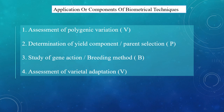In the first component we talked about how to assess polygenic variation, and in this video we will talk about metroglyph analysis and D² statistics by which we can assess this polygenic variation. After that, in the next part, you will see the determination of yield components or parent selection — we can select different components contributing to yield directly or indirectly, using correlation analysis, path coefficient analysis, discriminant function analysis, etc.